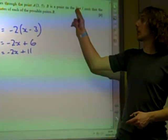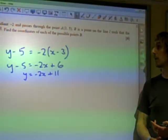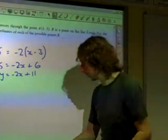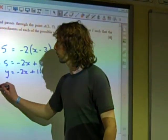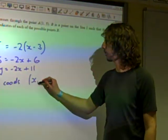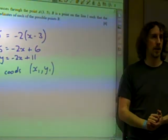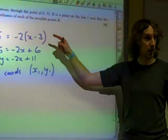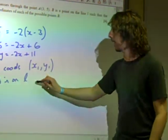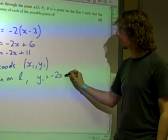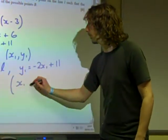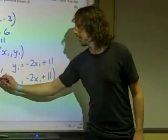B is the point on the line L such that the distance AB is 6 root 5. Find the coordinates of each of the possible points of B. So B has these coordinates. Should we just call them x₁ and y₁? But B is on the line, so if B is on the line, that means B fits this equation. So as B is on the line L, then we could say that y₁ is minus 2x₁ plus 11. So the coordinates of B are now looking like x₁ and minus 2x₁ plus 11. That is the point B.